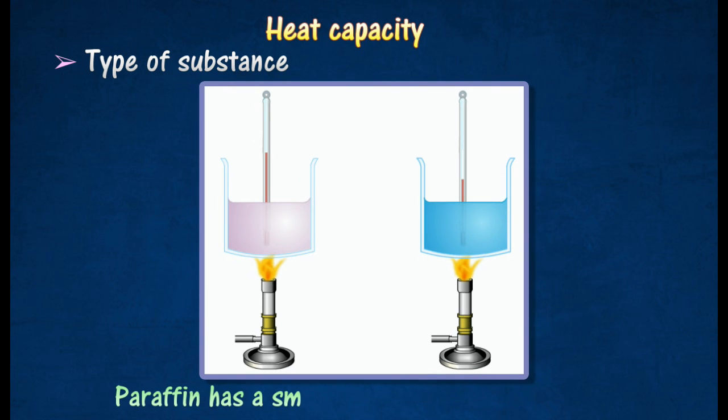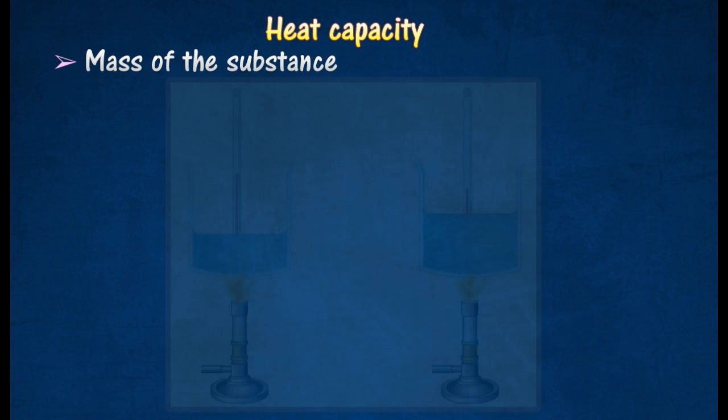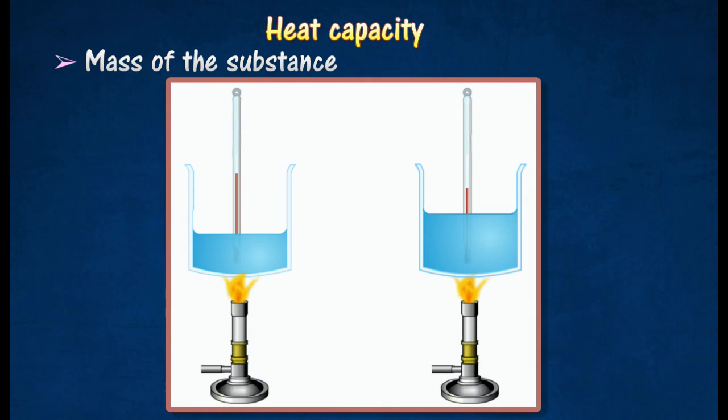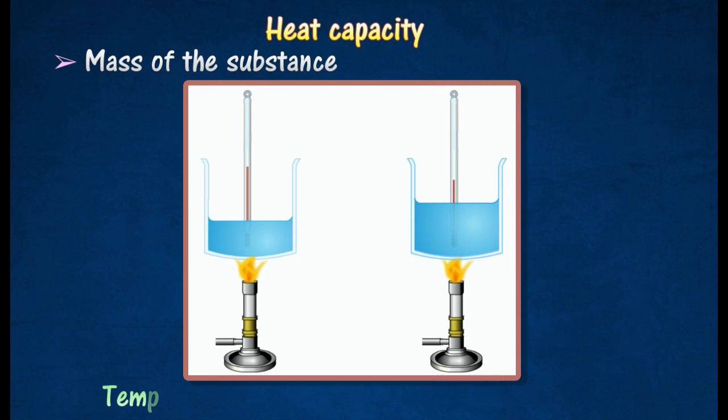Thus, paraffin has a smaller heat capacity than an equal mass of water. The figure shows two beakers containing different masses of water heated in turn for the same time by the same Bunsen burner. The temperature rise in the first beaker will be higher than the other beaker containing more water. Hence, it can be concluded that the temperature rise of a substance depends on its mass.